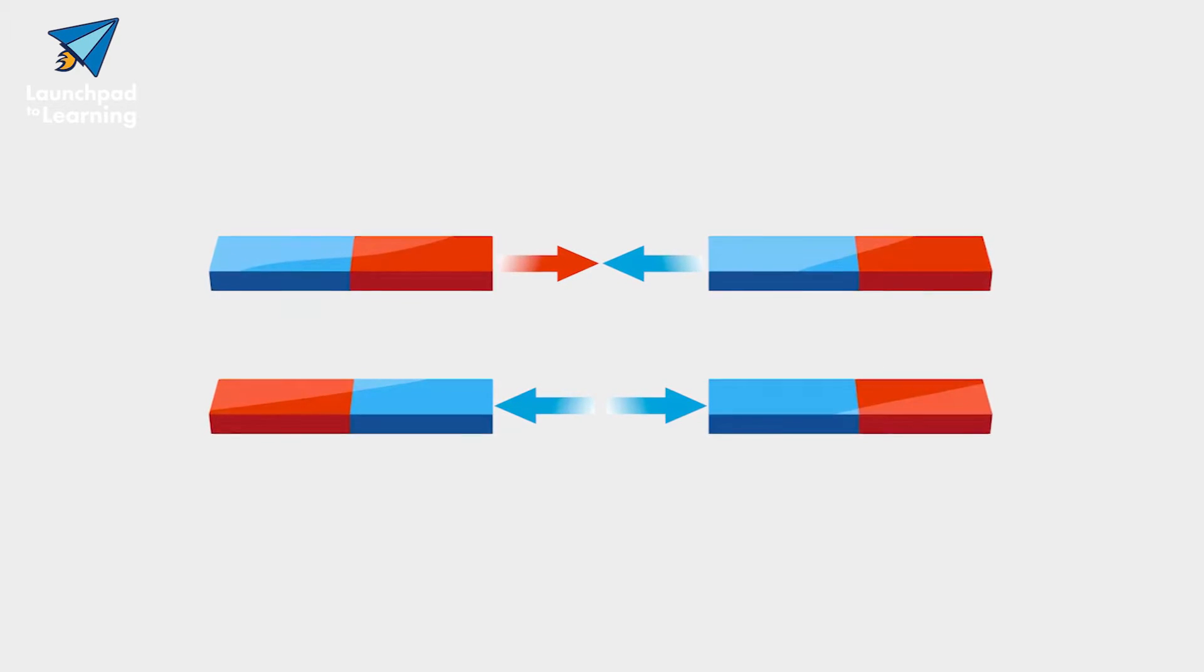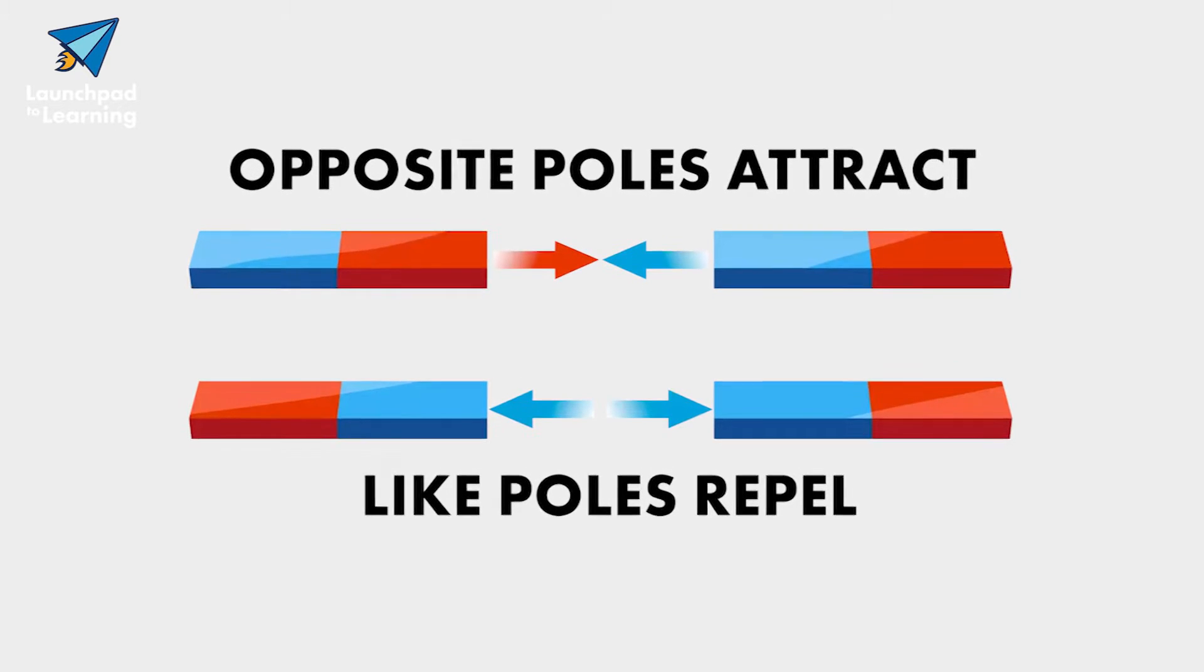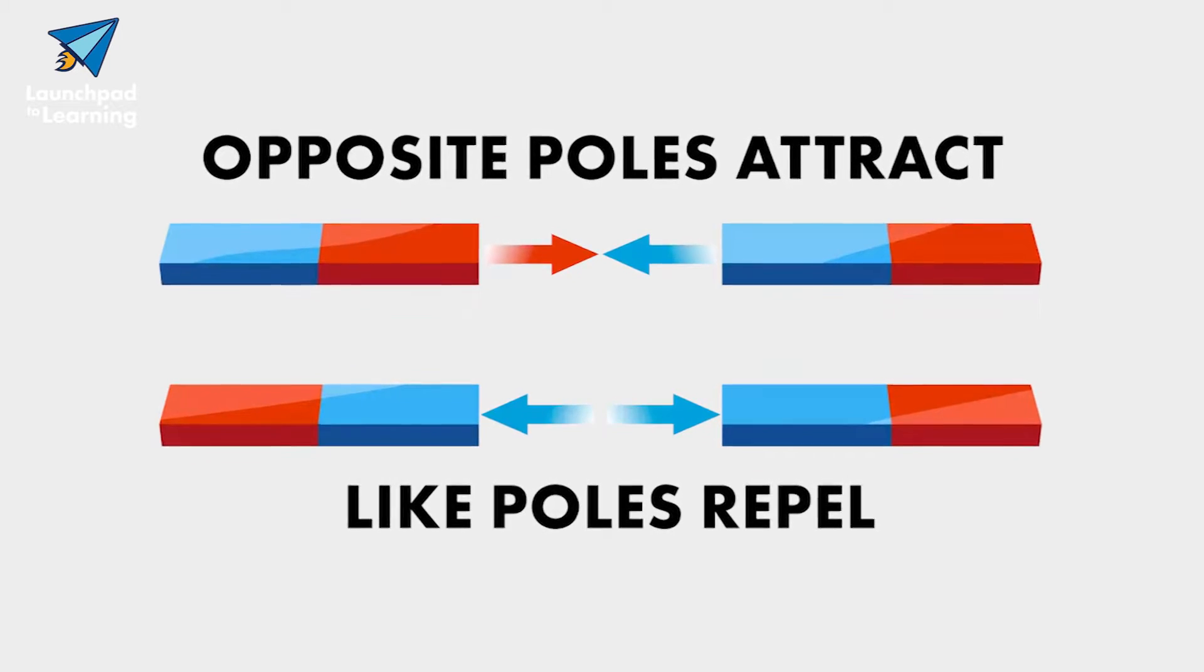Every magnet has two poles, a north and a south. Opposite poles attract each other and the identical poles repel each other away, like a little force field.